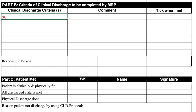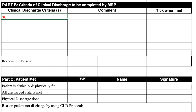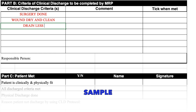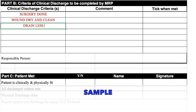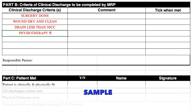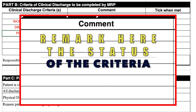The MRP should include all necessary indicators that the patient will have during his or her discharge in the clinical discharge criterion column, like patient surgery is completed, wound status is dry and clean, drainage level is less than 50cc, physiotherapy, and others. The MRP should remark the status of the clinical discharge criteria in the comments section and emphasize if the criteria are met or not met in the third column.